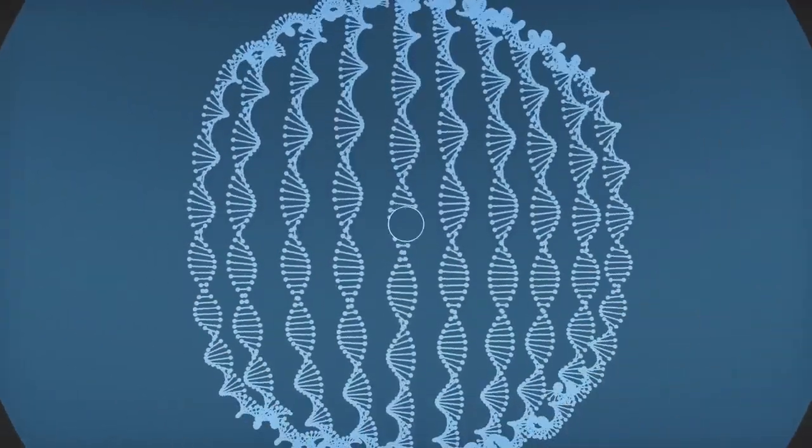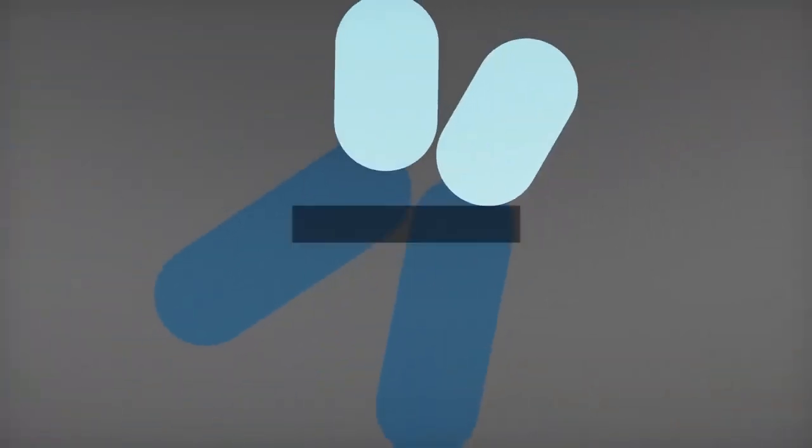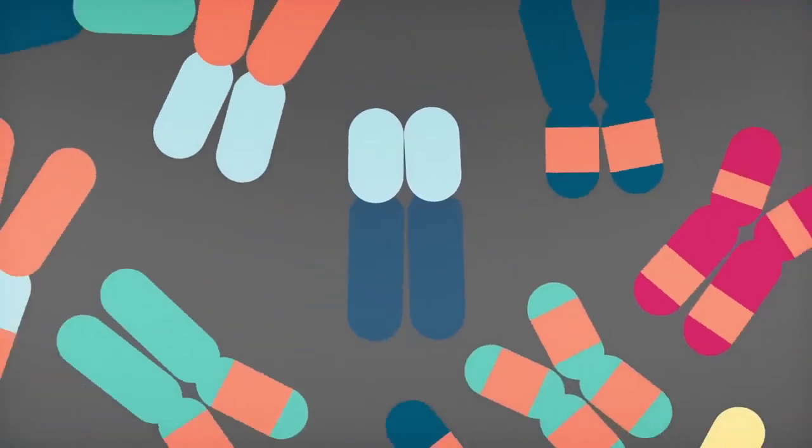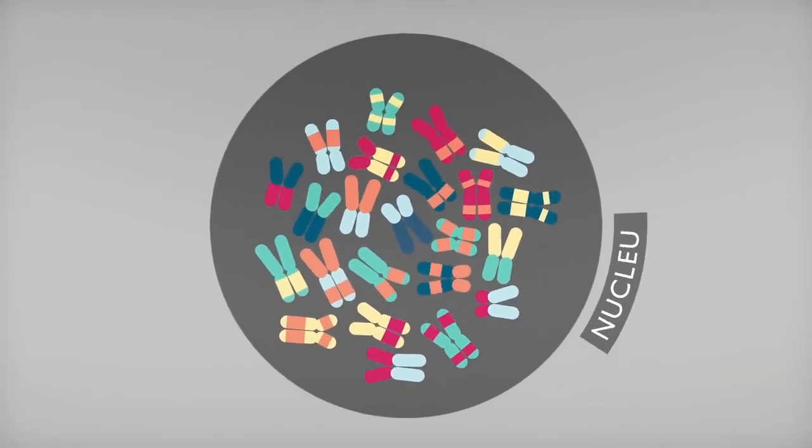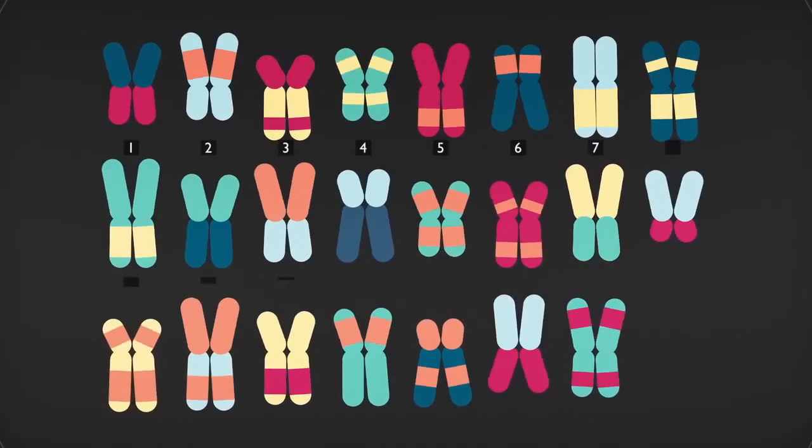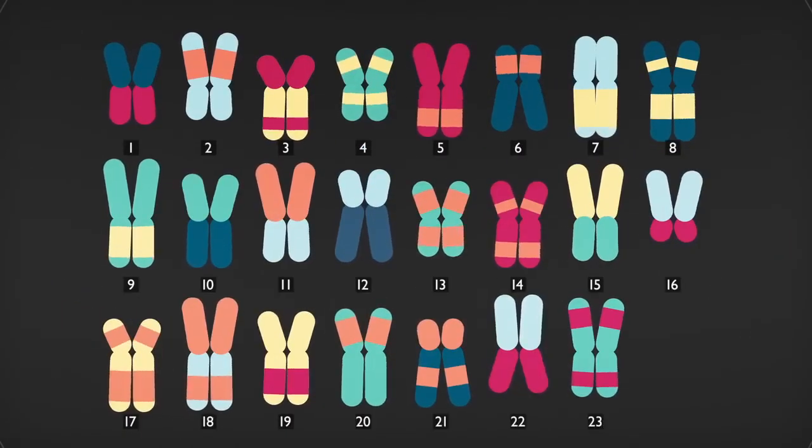DNA folds into paired packages called chromosomes that are stored in the nucleus of the cell. Different species have different numbers of chromosomes. Humans have 23 pairs.